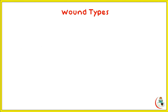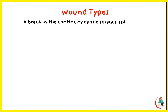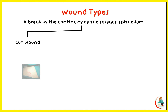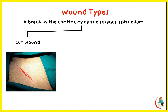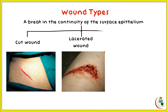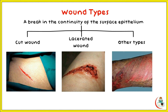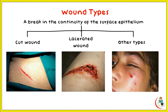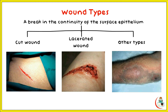A wound is defined as a break in the continuity of the surface epithelium. Wound types can be cut wounds, typically surgical incisions. Wounds may be lacerated. There are other types like contusions, hematoma, ecchymosis, puncture wounds, etc.